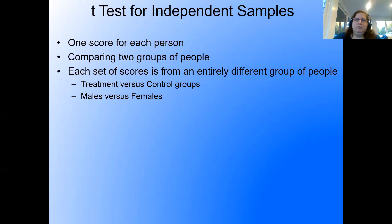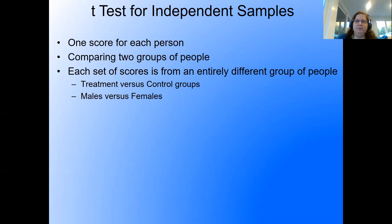We might do males versus females, treatment versus control groups, or people who are younger versus people who are older. The only restriction is we can only have two groups, two samples, and they have to be entirely independent from each other — no one can overlap. If someone in your treatment group winds up joining your control group, that would not work.